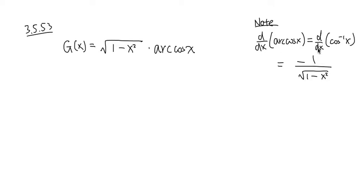The derivative of the inverse cosine is negative 1 over square root of 1 minus x squared. Now let's come back to the original equation. This is the product of two functions, so we have to use the product rule.